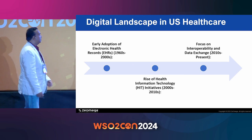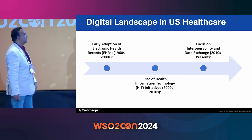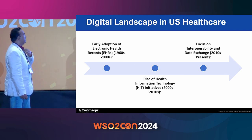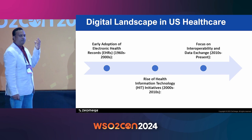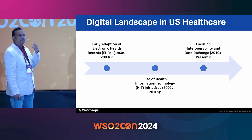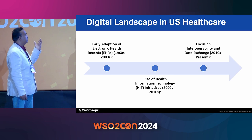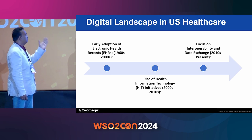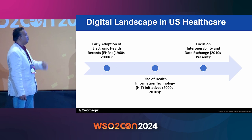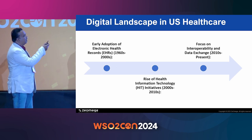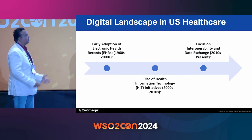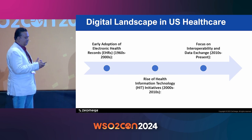Looking at the landscape: in US healthcare, the early adoption of electronic health records started with paper. Everything in hospitals and clinics was captured in paper format. The early adoption of EHR and EMR started until 2000, after which information technology came and interoperability platforms were introduced. Now the focus is on how to exchange data using different standards.